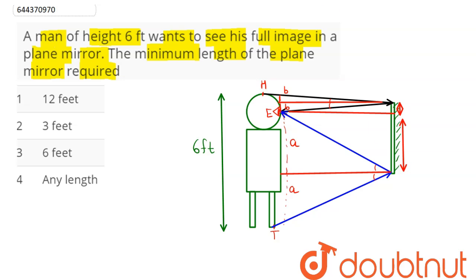So, here, the minimum height of this mirror will be, this is A, this is B, hence the minimum height of the mirror is A plus B.